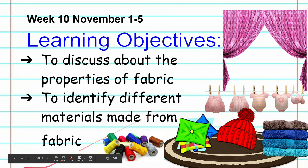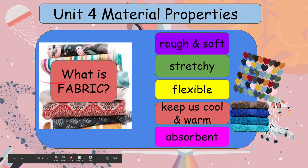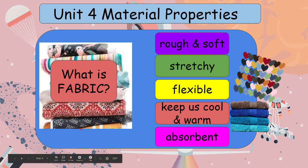First, let's know about what is fabric. Fabric is what something is made from, especially clothing. It is another type of material and has a range of properties. Fabric is made from fibers — for example, wool, cotton, or silk — which come from living things.